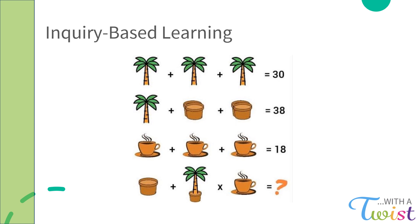So, how would we approach this from a standpoint of inquiry-based learning? Again, the scenario: your student comes up to you and says they don't know what to do. Instead of answering them, you ask them questions. A first question might be: 'Does this resemble anything we've done in class so far?' And the student might say: 'Kind of. I get how each image is like its own variable, but there are three of them and I don't know what to do. I know in class we've done one-variable equations, but this is too confusing.'